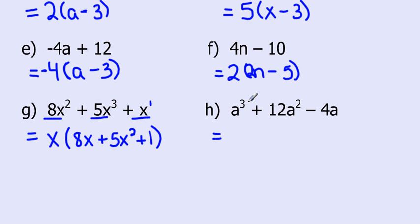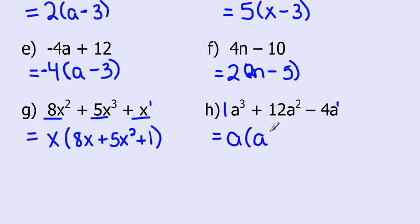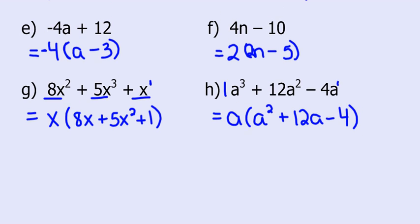For this last one, 8a cubed plus 12a squared minus 4a: if I was looking for a number to take out, the only possible one would be 1. So instead I'm just going to look at the variables. I have 3 a's here, 2 here, and just 1, so the biggest I can take out is 1 a. a cubed divided by a leaves a squared, 12a squared divided by a gives 12a, and negative 4a divided by a leaves negative 4. And there you have it.